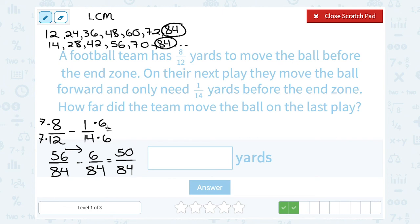And I think I'm going to be able to simplify this answer a little bit, 50 out of 84, because I'm noticing they're both even numbers. And if they're both even numbers, that means that 2 goes into both of them. So if 2 goes into both of these, well, 2 times 25 would give me 50, and then 2 times 42 would give me 84. So if I cancel out my common factor of 2, I'm left with 25 over 42. So finally, now we know that the team must have moved the ball 25/42 of a yard on the last play.